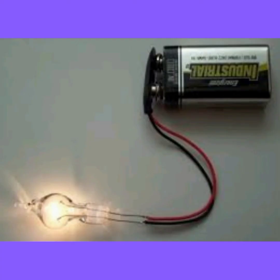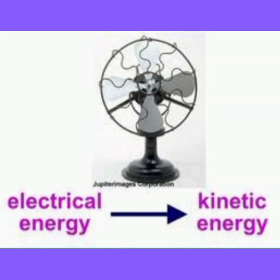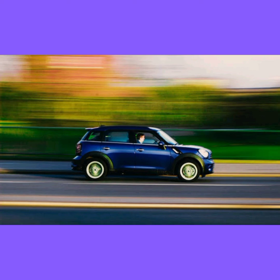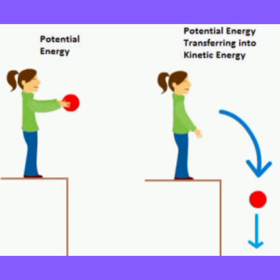Similarly, if a battery is used to glow a bulb, we are using chemical energy and converting it to electrical energy. When an electric fan moves, it transforms electrical energy to kinetic energy. A vehicle moving is an example of chemical energy being converted to mechanical energy. A ball falling from a height towards the ground converts potential energy to kinetic energy. These are some examples of conversion of energy from one form to another.